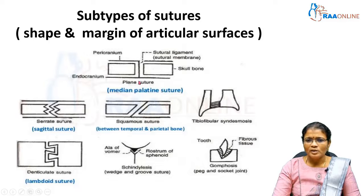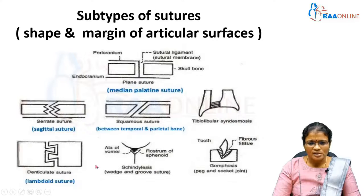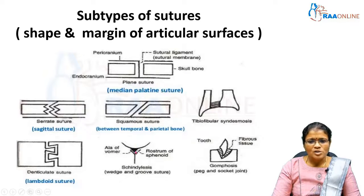To summarize suture types: plane suture when margins are plane; serrate suture when margins are serrated; squamous suture when margins are overlapping; and denticulate suture when margins have a tooth-like appearance. There is also a special type called the wedge-and-groove suture, otherwise known as schindylesis, where a wedge-like bone fits into a groove-like bone. The example is the alae of the vomer fitting into the rostrum of the sphenoid. All these suture types are present in skull bones.